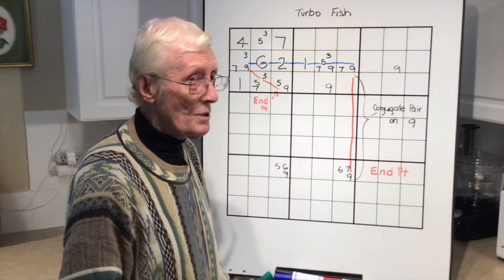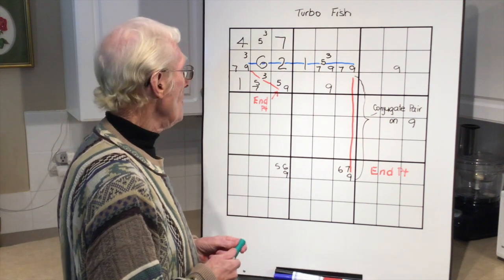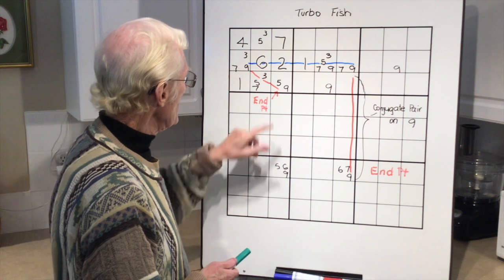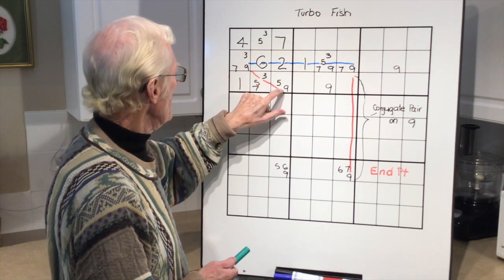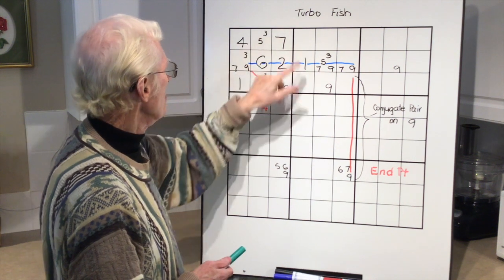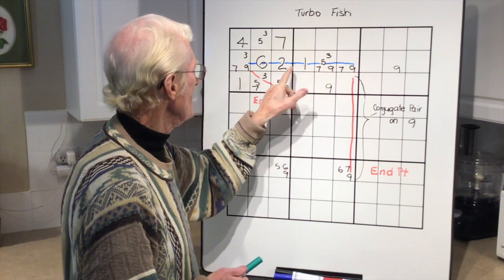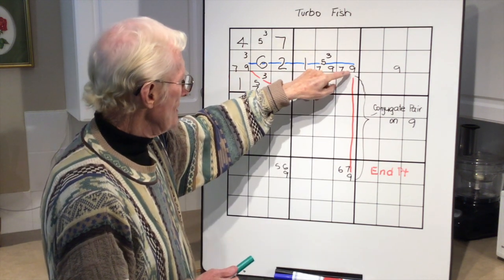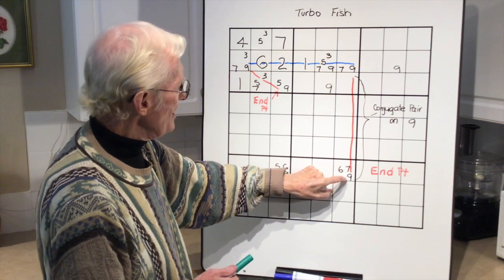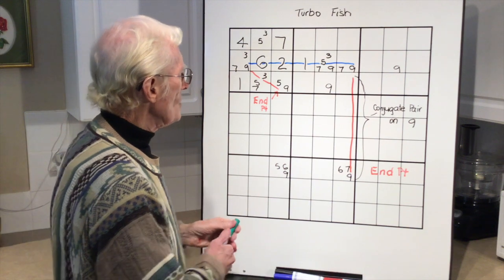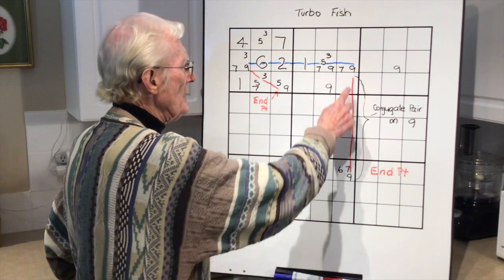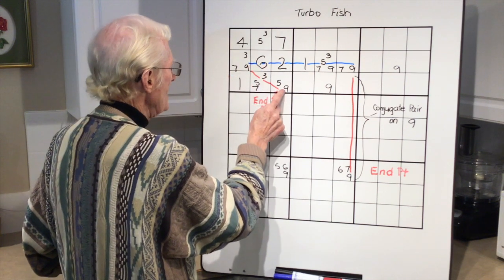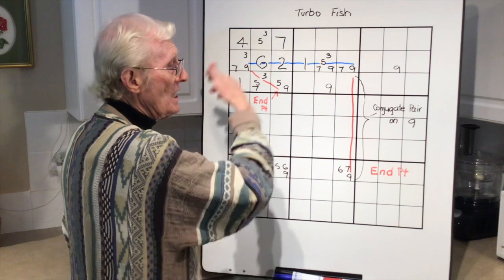Here's our final example of a chain. I'm using strong links in red and weak links in blue. We start at an endpoint with a strong link from here to here, because they are the only two nines in this block. Then we do a weak link from here to here, because there are several nines in this row. Then we go from this down to this one — a strong link — and that's the endpoint. We can call this a conjugate pair because the nine can only appear in those two places in that column.